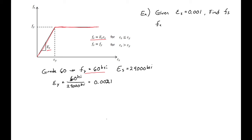So our FS then is equal to 0.001, our strain, times 29,000 KSI, our stiffness. And we'll get 29 KSI.